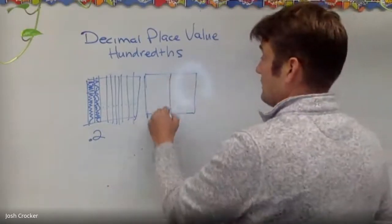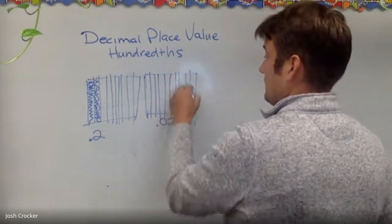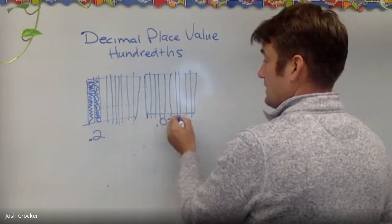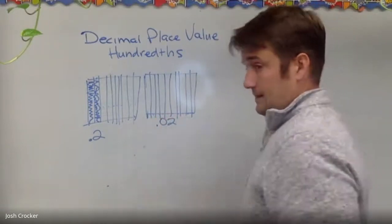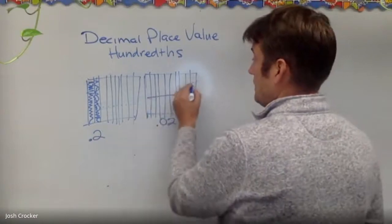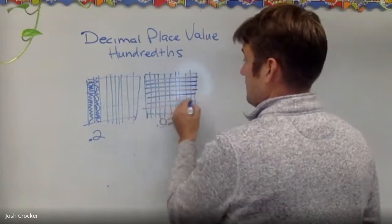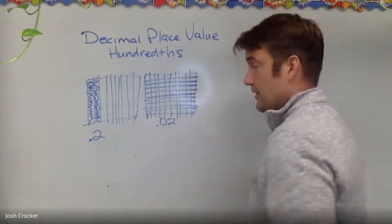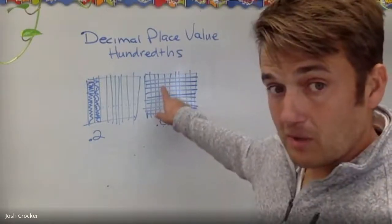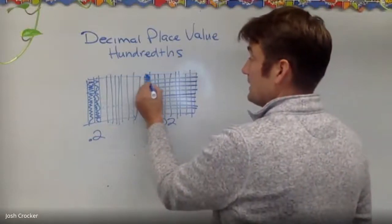First I'd have to make that model. So these are tenths — one through ten. I don't have any tenths. Now there are hundredths. These pieces are much smaller than the tenths pieces. Two hundredths would look like that.